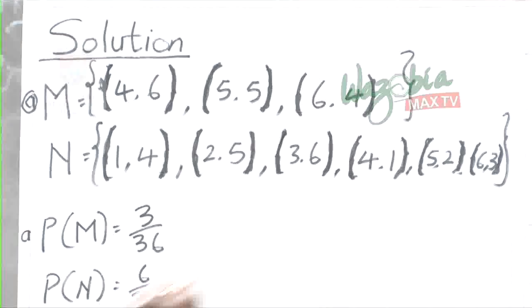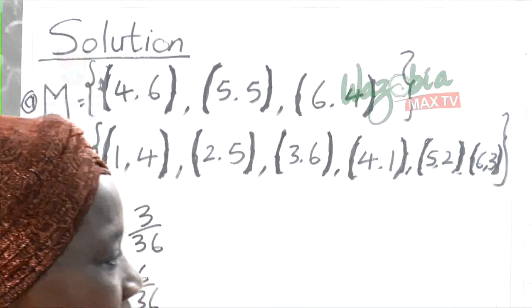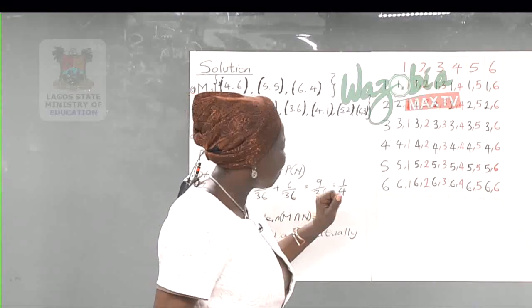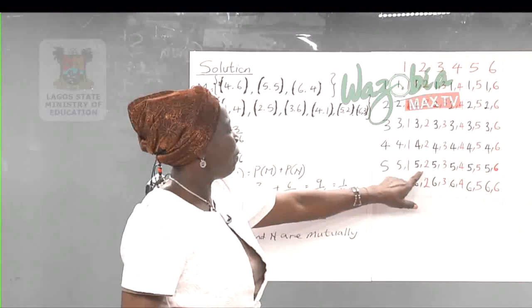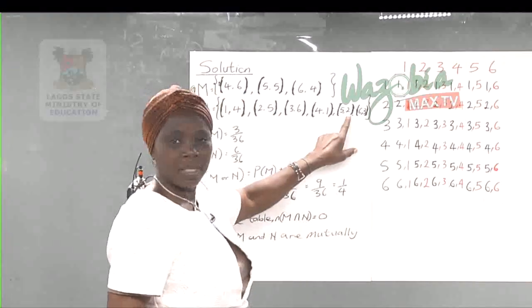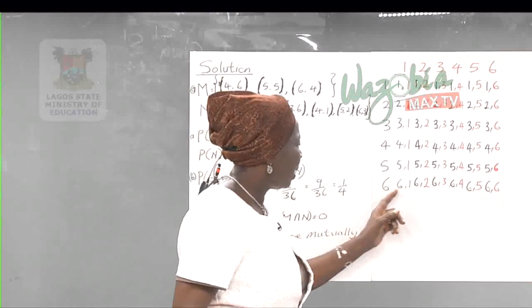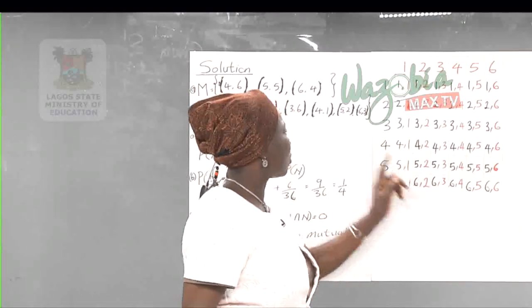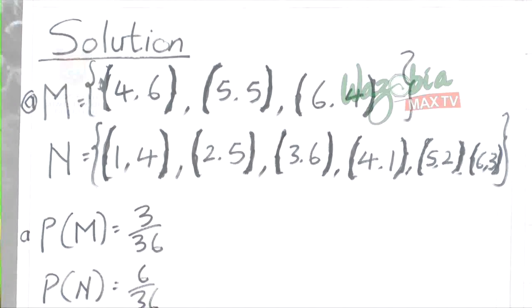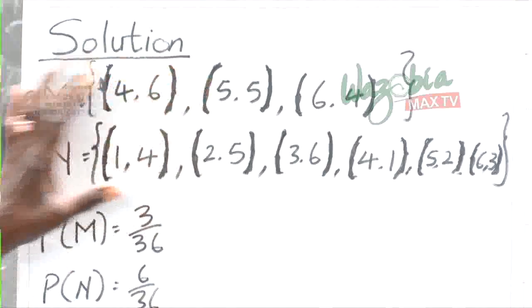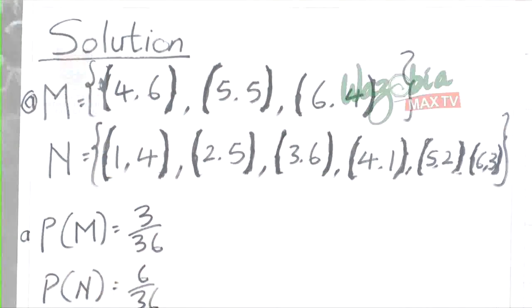The elements of N with a difference of 3 are: (4,1), (5,2), (6,3), (1,4), (2,5), and (3,6). So N has six elements in total.